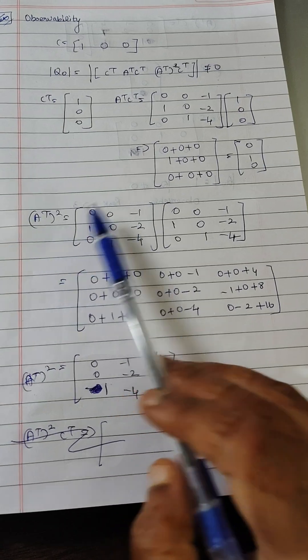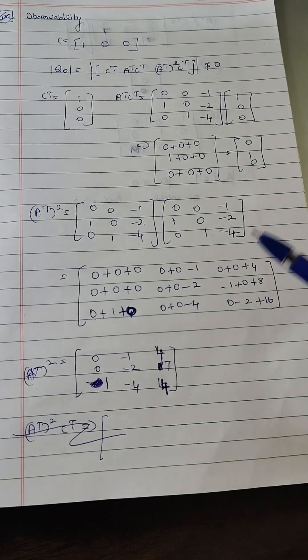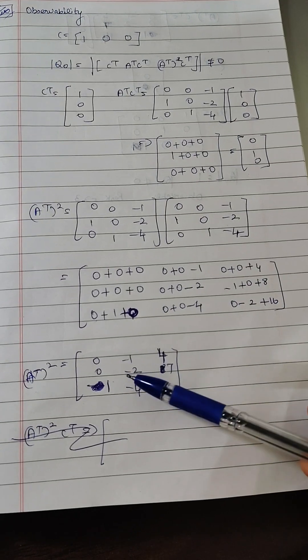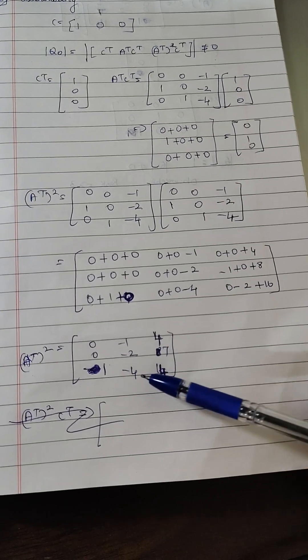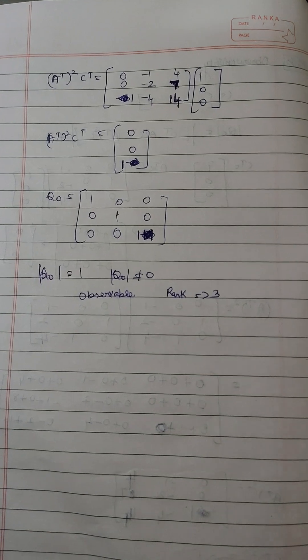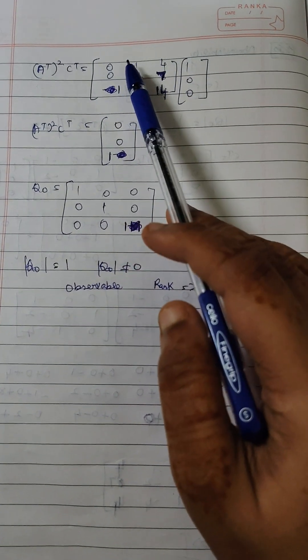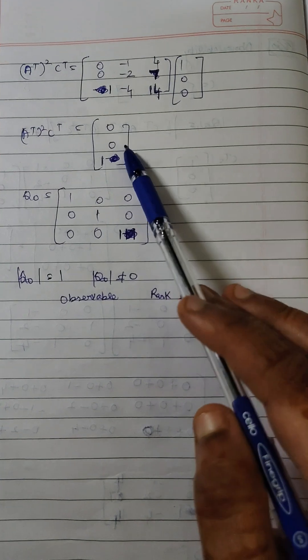What is a transpose square? a transpose into a transpose while we are calculating the a transpose square we get the value as 0 minus 1 4, 0 minus 2 7, 1 minus 4 and 14. So a transpose square c transpose, when we multiply these two we are getting the value of 0 0 1.